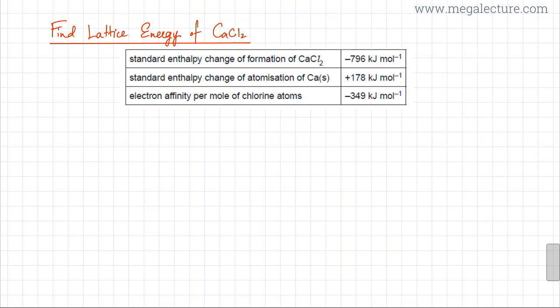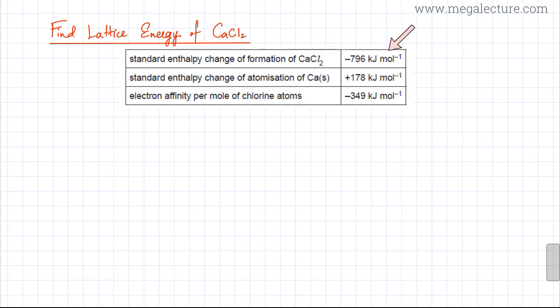In the following example question, I'm going to find the lattice energy of calcium chloride using a Born-Haber cycle. Some information is provided: the standard enthalpy change of formation is minus 796 kilojoules per mole, the standard enthalpy change of atomization of calcium is also known, and the electron affinity per mole of chlorine is also known.